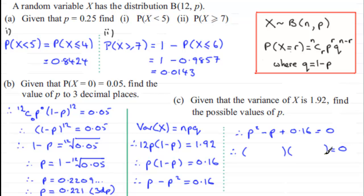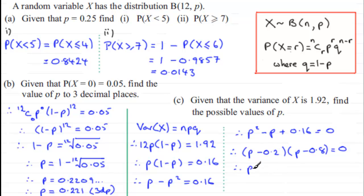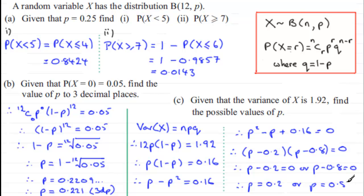I suspect this will factorize. Using decimals, 0.16 factors as 0.2 times 0.8, and the bracket signs are both minus, giving (P minus 0.2)(P minus 0.8) = 0. Setting each factor to zero: P minus 0.2 = 0 or P minus 0.8 = 0, so P = 0.2 or P = 0.8.